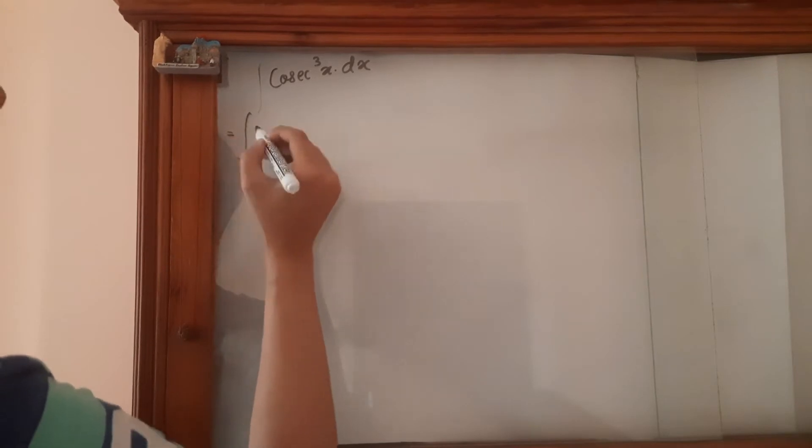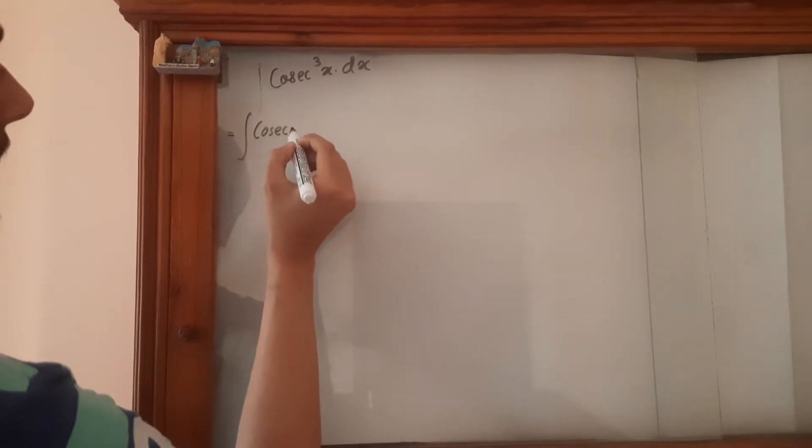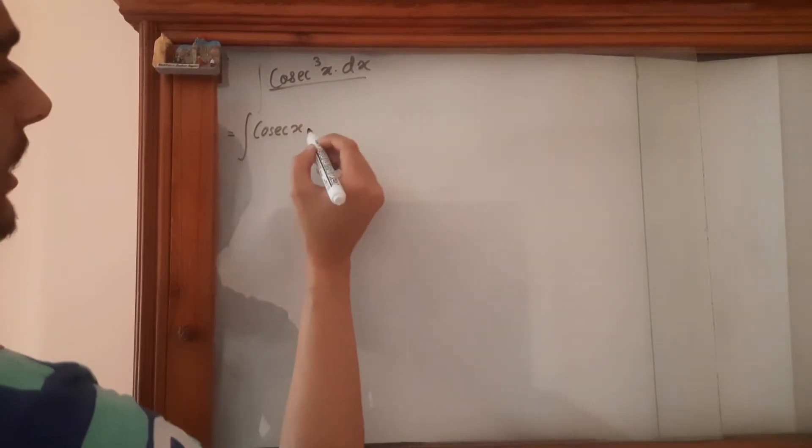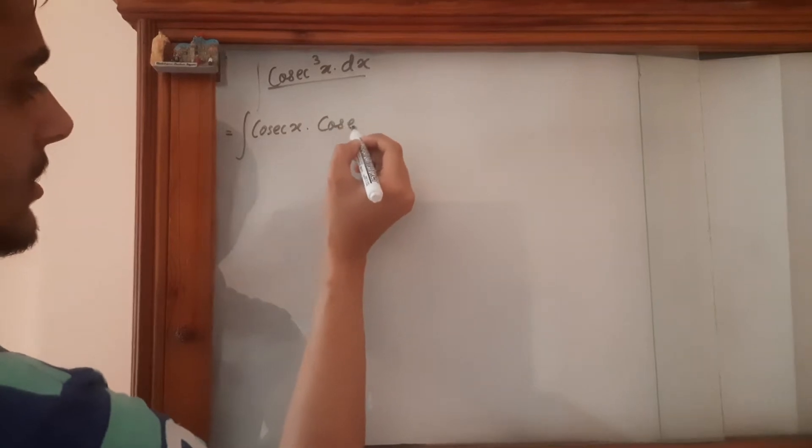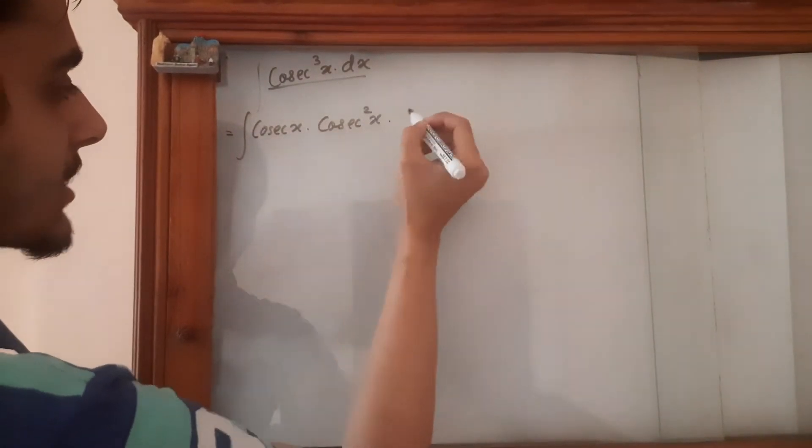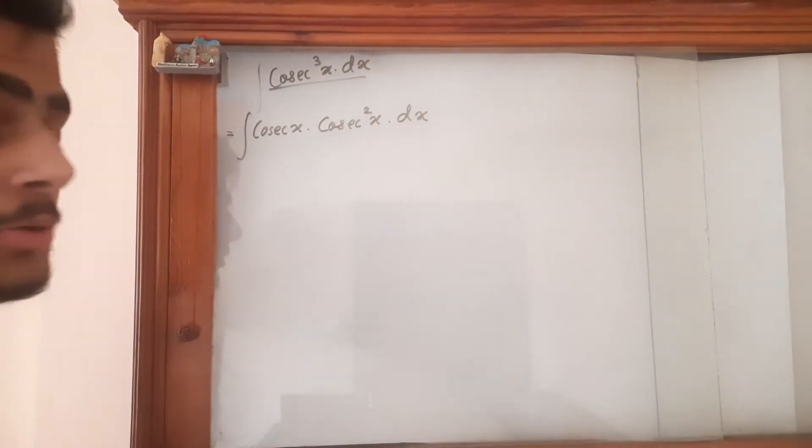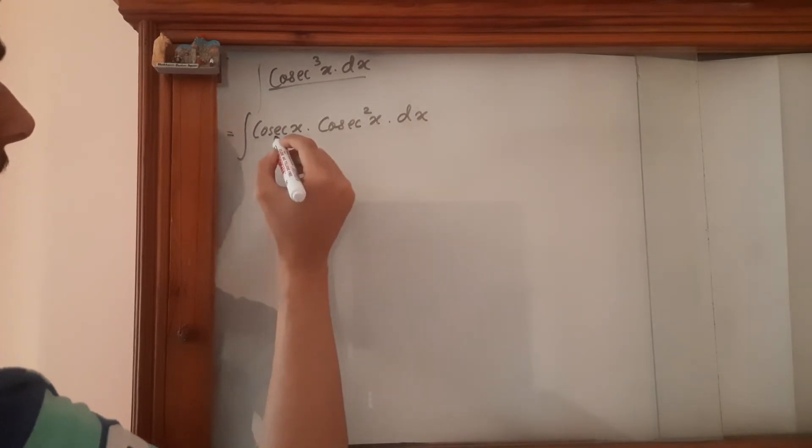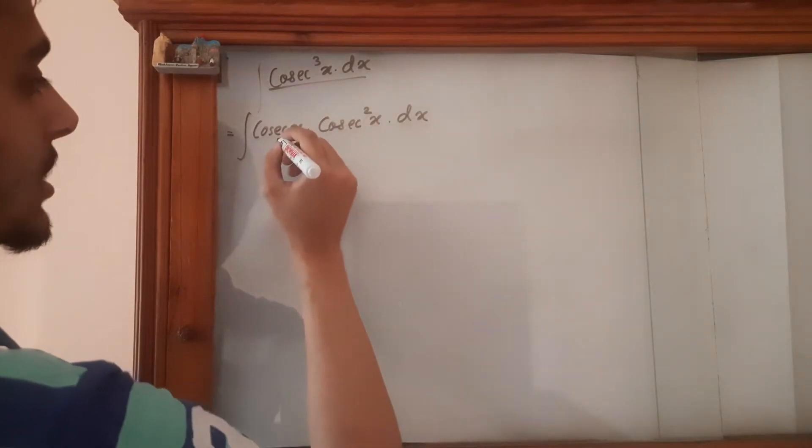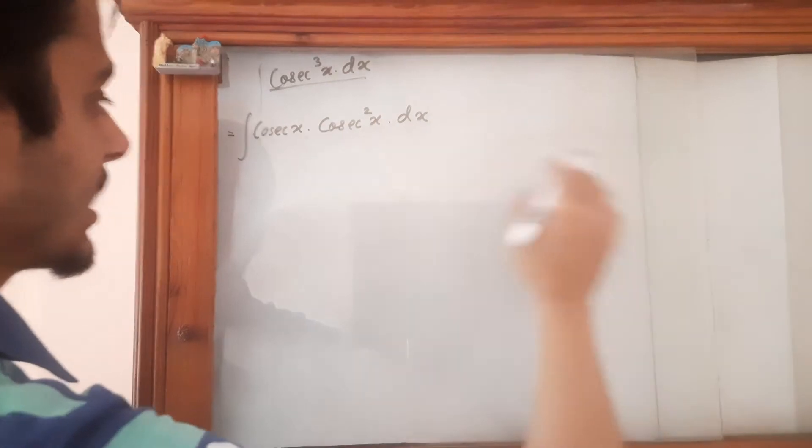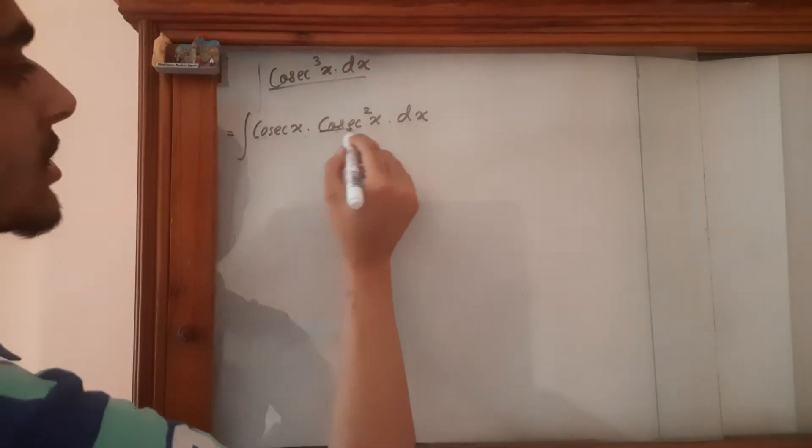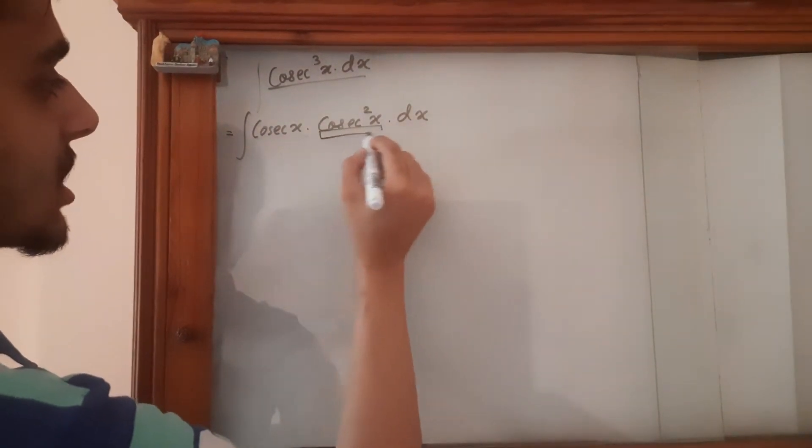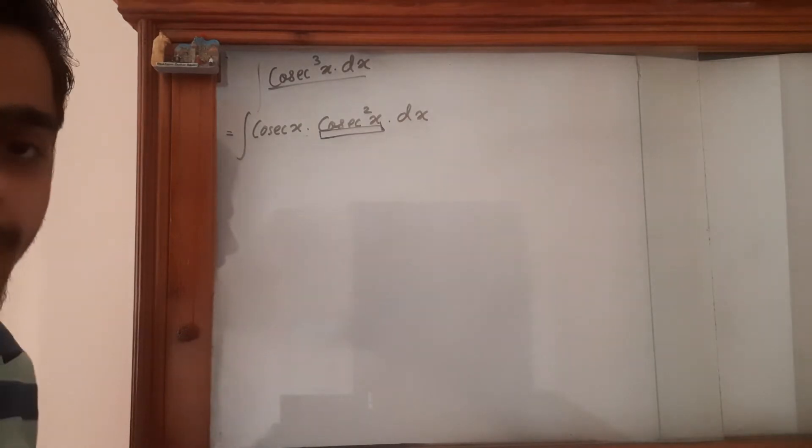So to start off we're going to write this as cosec x times cosec square x. So we're doing this so that we can apply the formula of integration by parts. So we know the derivative of this which is minus cosec x times cot x and we also know the integration of cosec square x.